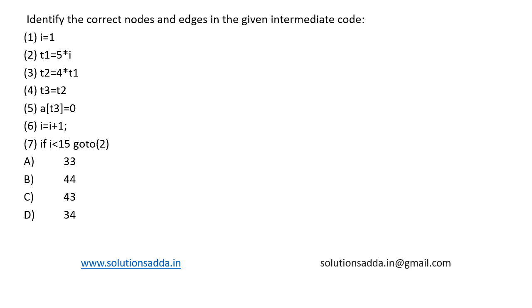This is a question from compiler design: identify the correct nodes and edges in the given intermediate code. We are given an intermediate code, so let's draw the control flow graph for the intermediate code. What is a control flow graph?